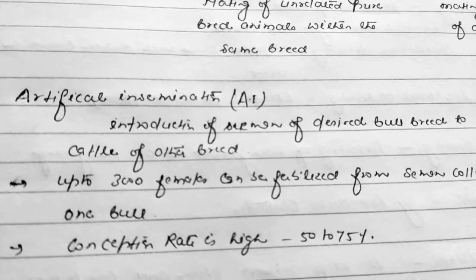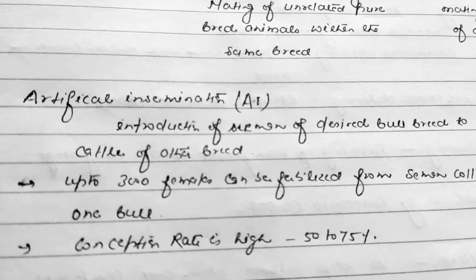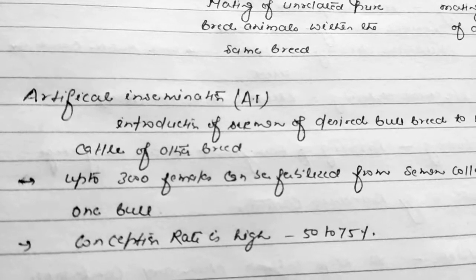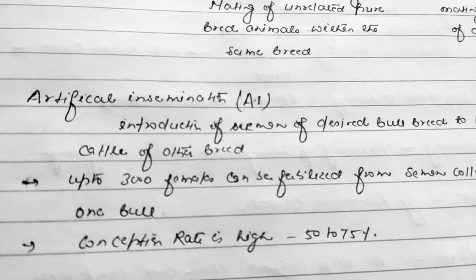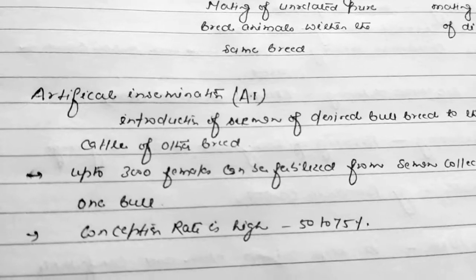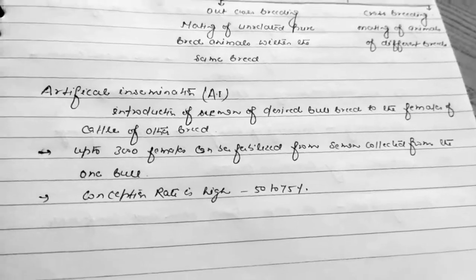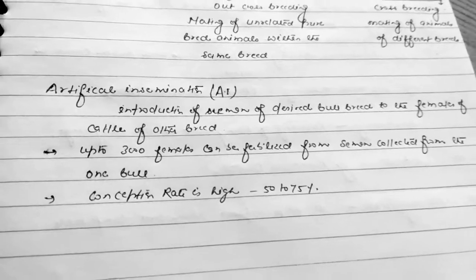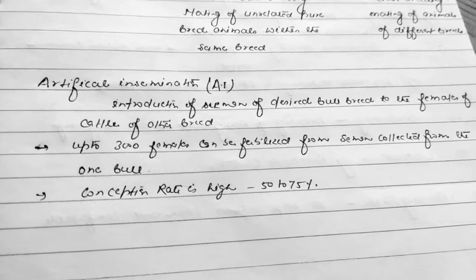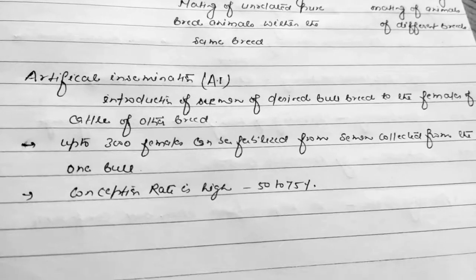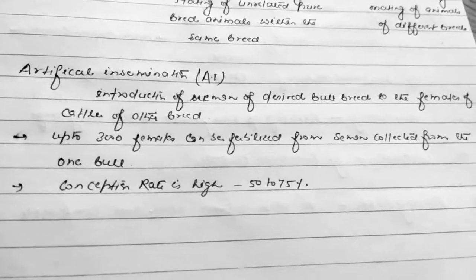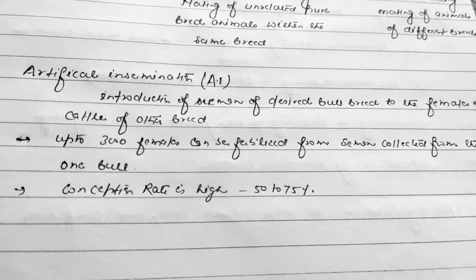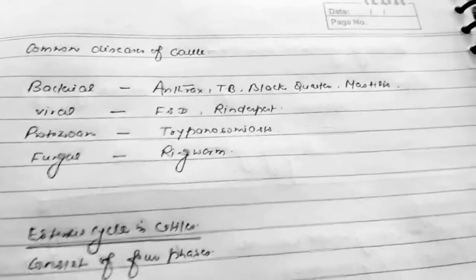Other methods to produce high-yielding offspring include artificial insemination (AI), which is the introduction of semen of a desired bull breed into the females of cattle of another breed. Up to 300 females can be fertilized from semen collected from one bull. The conception rate in AI is 50 to 75 percent.